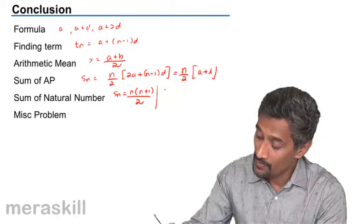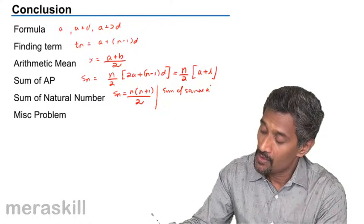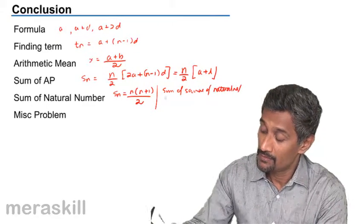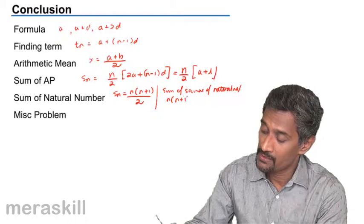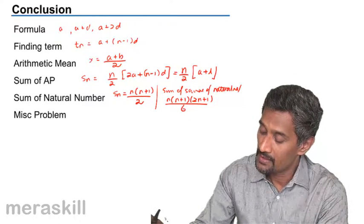Sum of squares of natural numbers, which is n(n+1)(2n+1)/6.